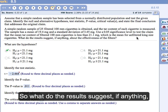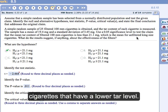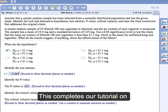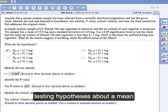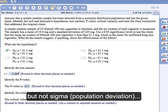So what do the results suggest, if anything, about the effectiveness of the filters? It's suggesting that they do produce cigarettes that have a lower tar level. So this completes our tutorial on testing a hypothesis about a mean, where we know s, the sample deviation, but not sigma, the population deviation.